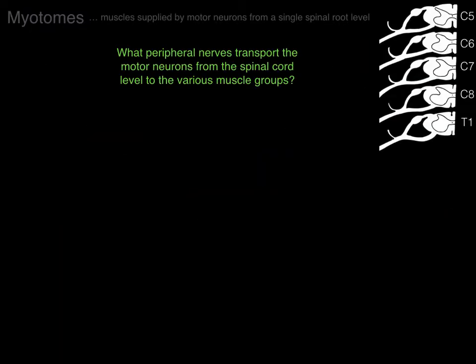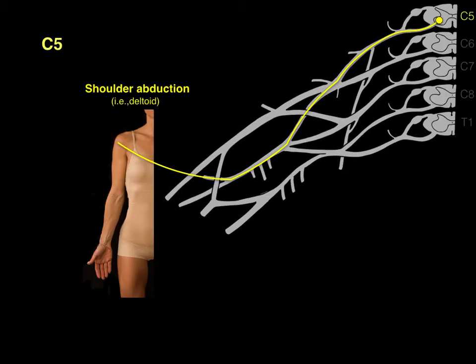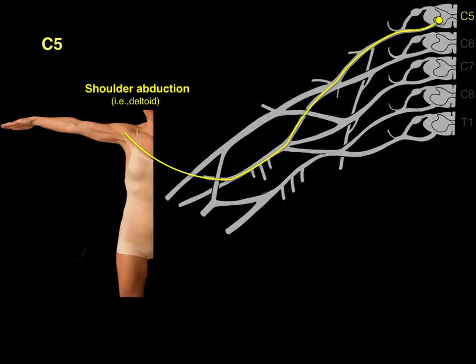What peripheral nerves transport motor neurons from the spinal cord level to the various muscle groups? That's the brachial plexus. The C5 myotome is shoulder abduction — primarily the deltoid — and the axillary nerve innervates the deltoid, transporting motor neurons from the C5 spinal cord level to the deltoid.